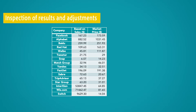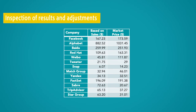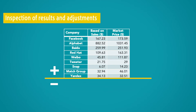The second adjustment is to redefine the peers by removing the three companies with abnormal values from sales multiples — that is, Interaction, Wix.com, and Switch. Even after the two adjustments, we see that almost all companies whose market capitalizations are less than $10 billion appear to be undervalued. This may mean that the size criterion is important for our peer group, though this may not always be the case. Therefore, our third adjustment could be to redefine a peer group of companies with market capitalization greater than $10 billion.